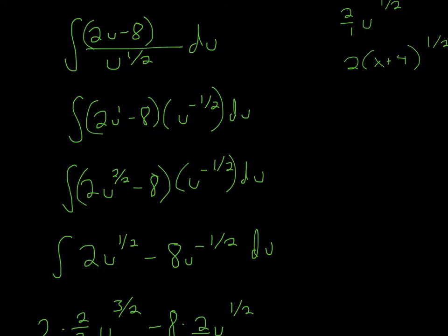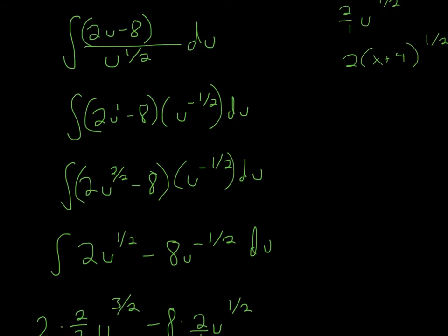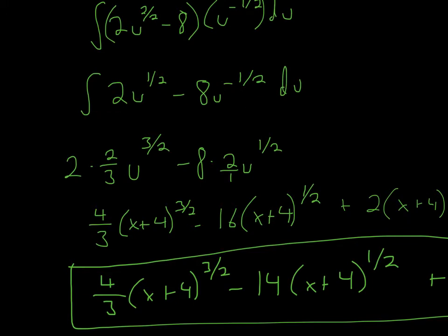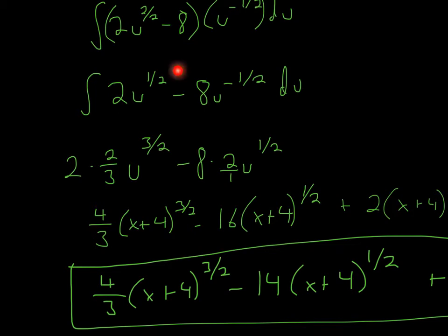So we get 2u to the 1/2, and then negative 8 times u to the negative 1/2, giving us 2u^(1/2) minus 8u^(-1/2) du. Don't forget the du. Now we do the integration. We pull out the 2 and add 1 to the exponent: 1/2 plus 2/2 gives 3/2. We invert 3/2 to get 2/3. So 2 times 2/3 equals 4/3.